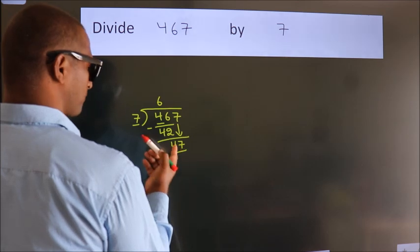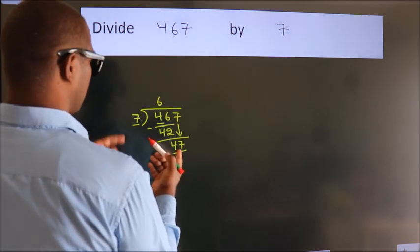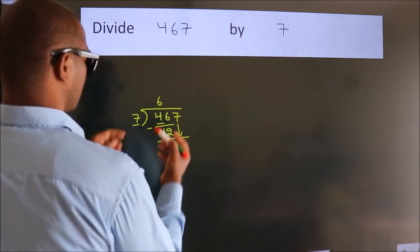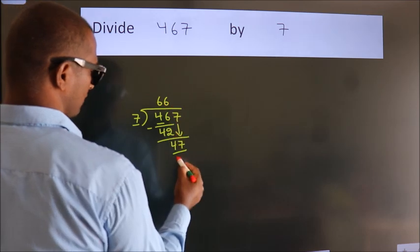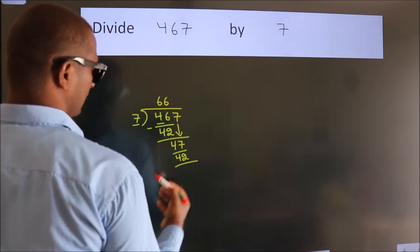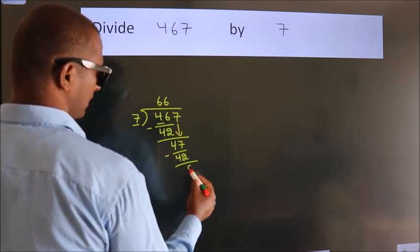So, 47. A number close to 47 in the 7 table is 7 sixes 42. Now we subtract. We get 5.